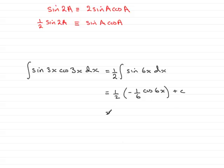So that when this is tidied up, we have a half times minus 1 sixth, which is minus 1 twelfth. And then it is the cos of 6x plus c.